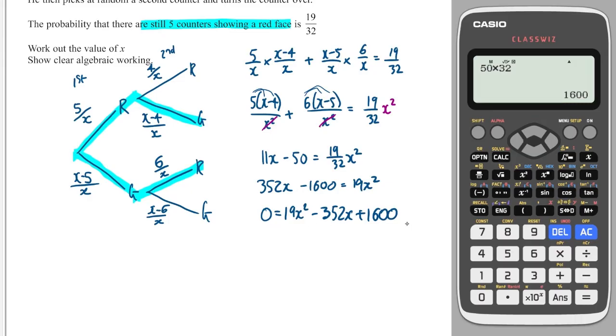Now, this is a tricky quadratic, very tricky one to solve via factorization. So I'm going to show you a little trick which you can use in your exam. You can go to equation, polynomial, degree 2, and you can type 19, minus 352 for the X, and plus 1600. And this gives me one answer and two answers.